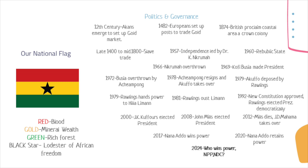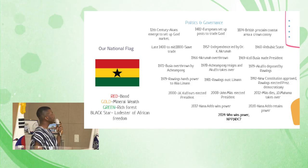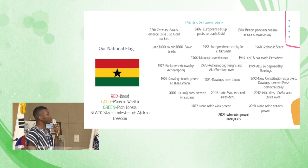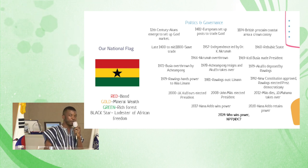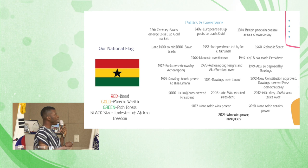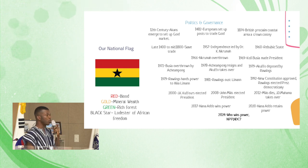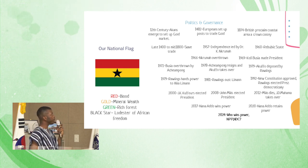Moving on to politics and governance: Ghana has gone through a series of transformations right from the 12th century to now. In the 12th century, it is believed that the Akans emerged to set up the Gold Coast. It is believed the Akans came from the northern part of Africa, went through Mali, arrived in Togo, and eventually reached present-day Ghana.